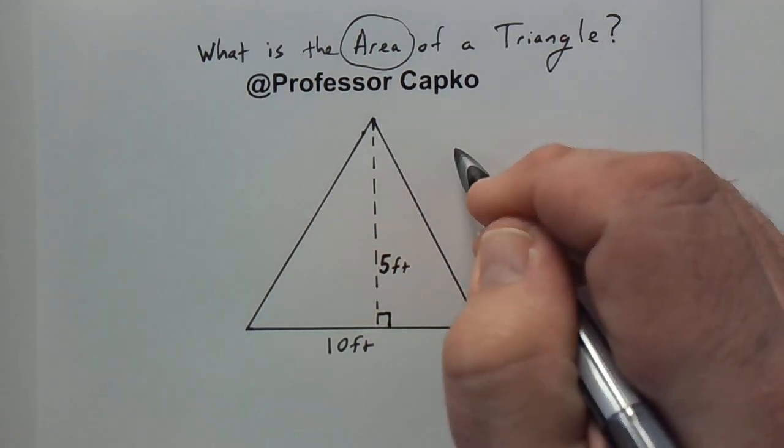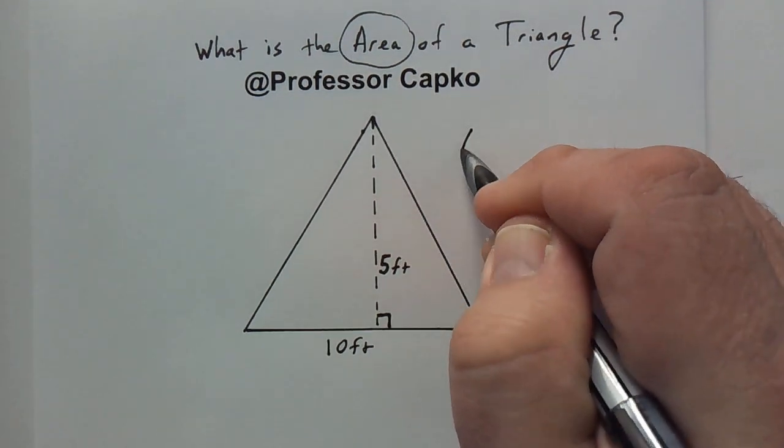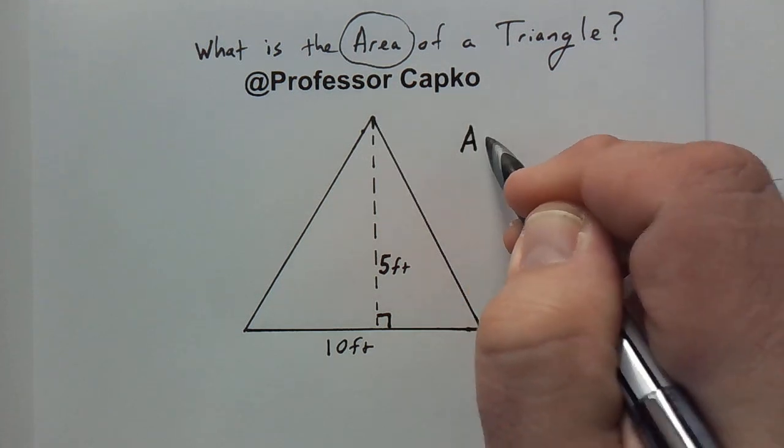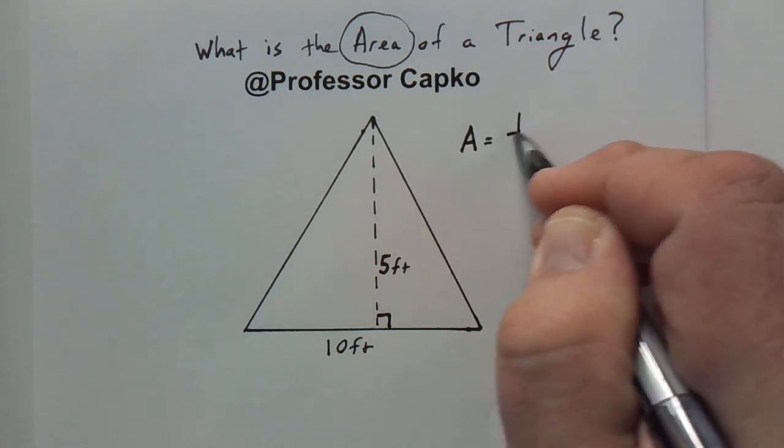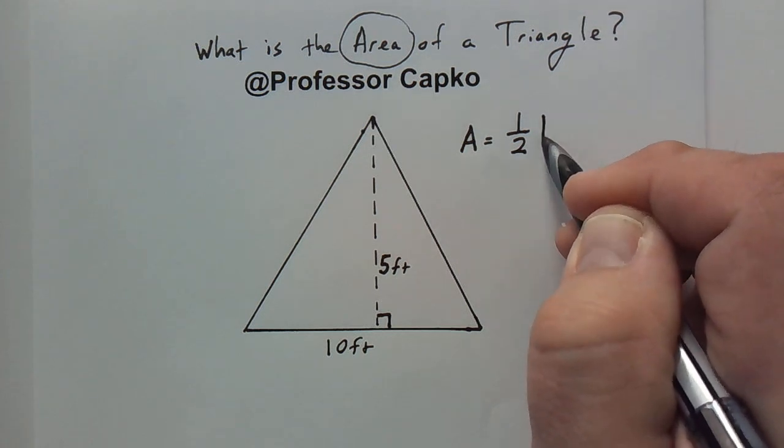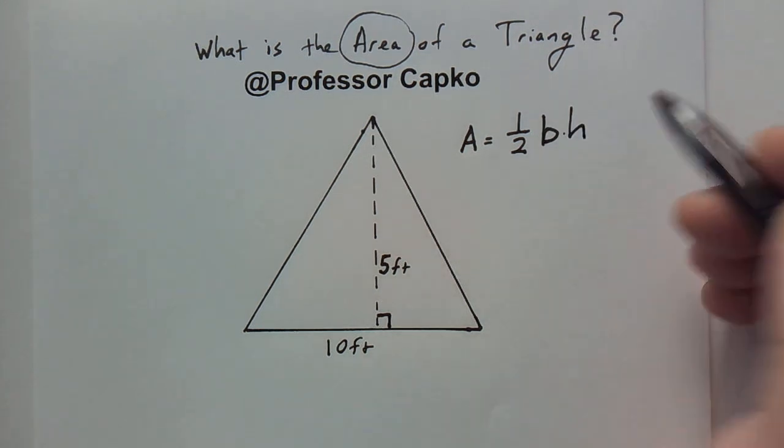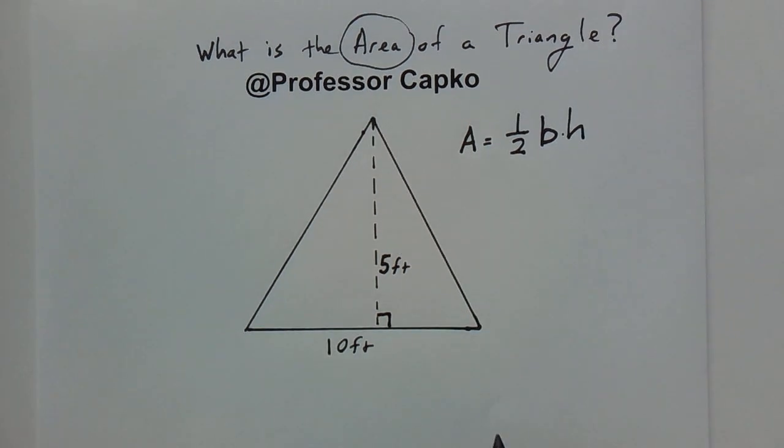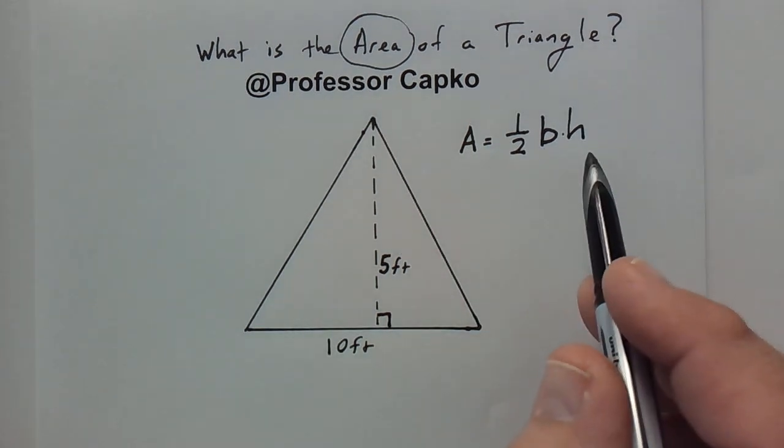So the formula for the area of a triangle is the area is equal to one half the base times the height. A = 1/2 × b × h.